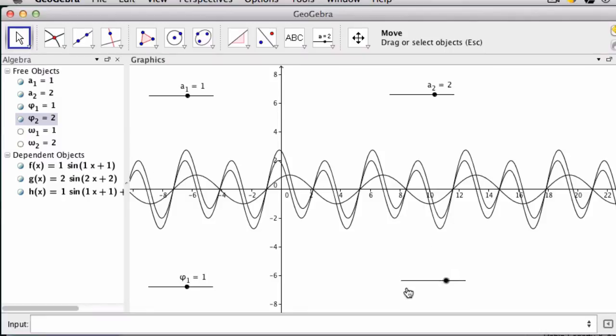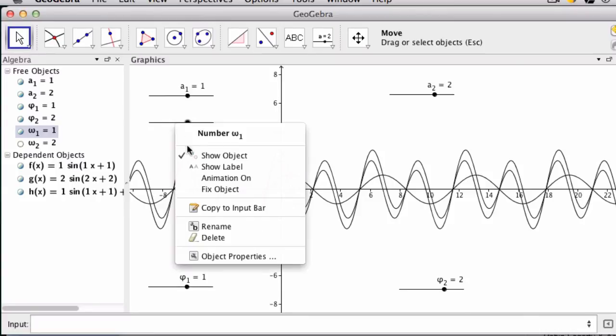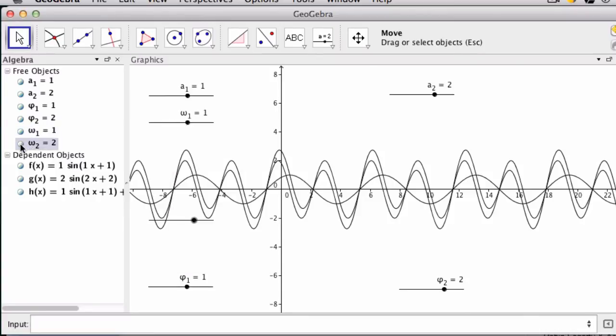Again, now on this side, I want to show my label, and then write omega sub one for our angular frequency here in the first one. And then omega sub two, which I'm going to drag over here.